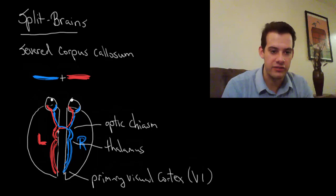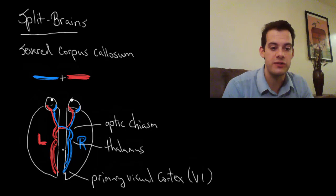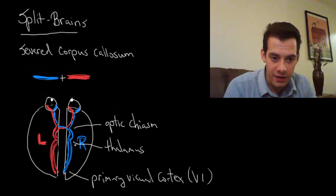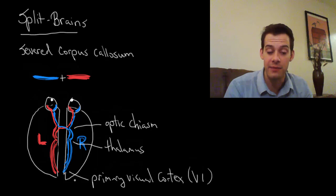So let's get back to our split brain patients. What happens when we split the corpus callosum here, we sever the corpus callosum, we split the brain, we don't cut the optic chiasm. So this process here still occurs, this transfer from visual field over to the opposite hemisphere still occurs.